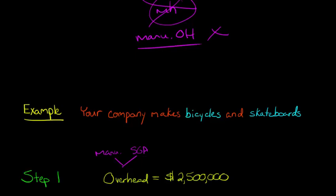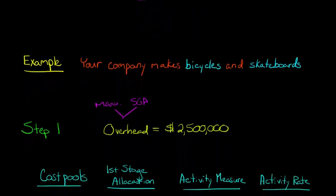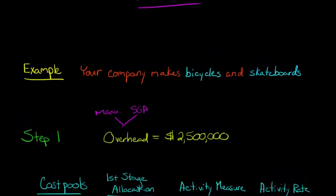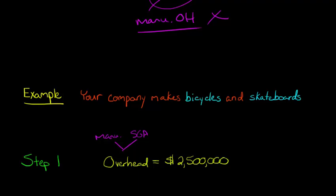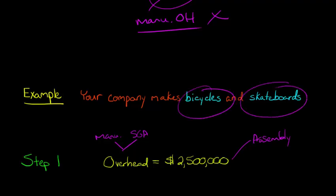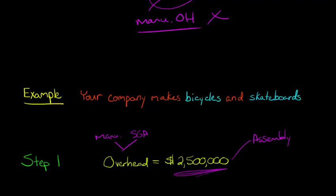Now that we've established the overhead bucket, we need to create something called cost pools. What we're essentially doing is asking: out of this $2.5 million, how does this break out in terms of different activities that are actually driving this overhead? We know it's not just machine hours. So after interviewing our employees, we find multiple drivers — one is assembly. As we assemble bicycles and skateboards, we're incurring some overhead, so that's one driver of that $2.5 million.